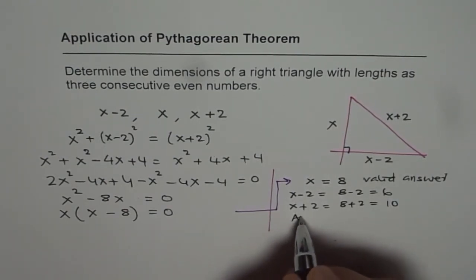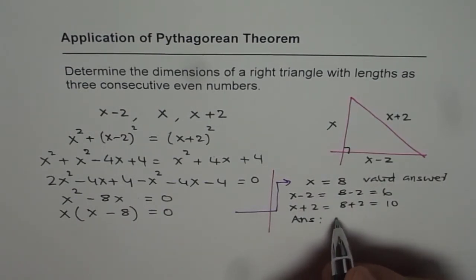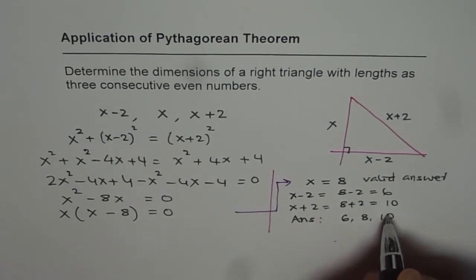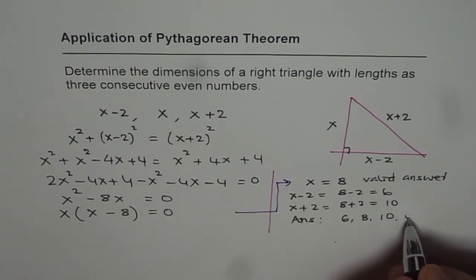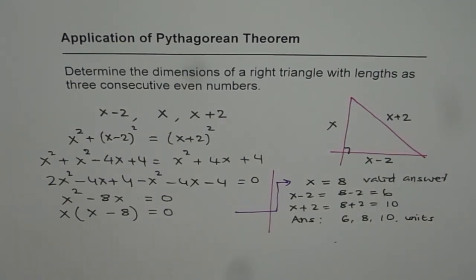And therefore, our answer is that the dimensions of the triangle are 6, 8, and 10 units. The units could be anything, but the ratio is 6 is to 8 is to 10. So that's how we can solve this question.